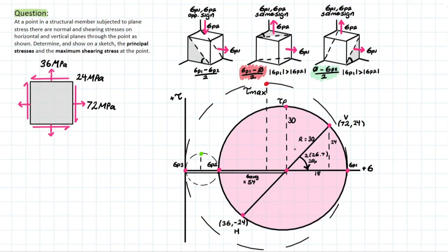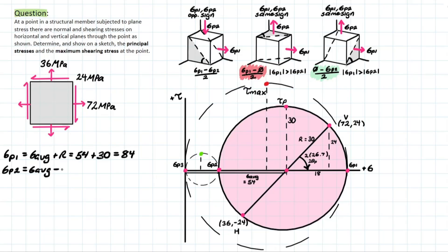Now that we've added our findings to the Mohr's circle, we can consider what our principal stresses are. Sigma p1 is sigma average plus the radius: 54 plus 30 equals 84 MPa. Sigma p2 is sigma average minus the radius: 54 minus 30 equals 24 MPa. And as discussed earlier, sigma p3 is equal to zero, which is plotted on the circle. The normal stress on the 45-degree plane for the unaltered triangular element is equal to sigma average of 54 MPa, since the max in-plane shear stress lands right at the center of the circle.